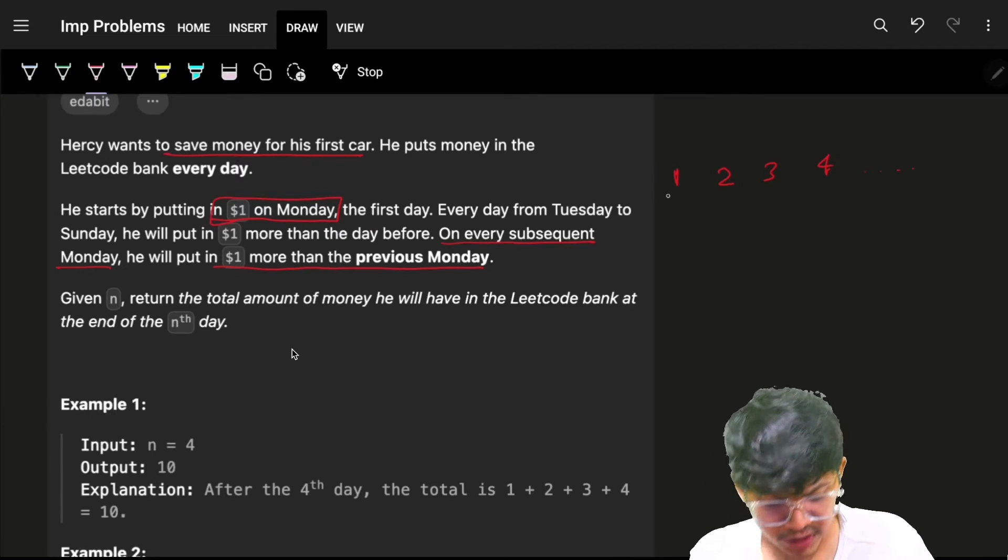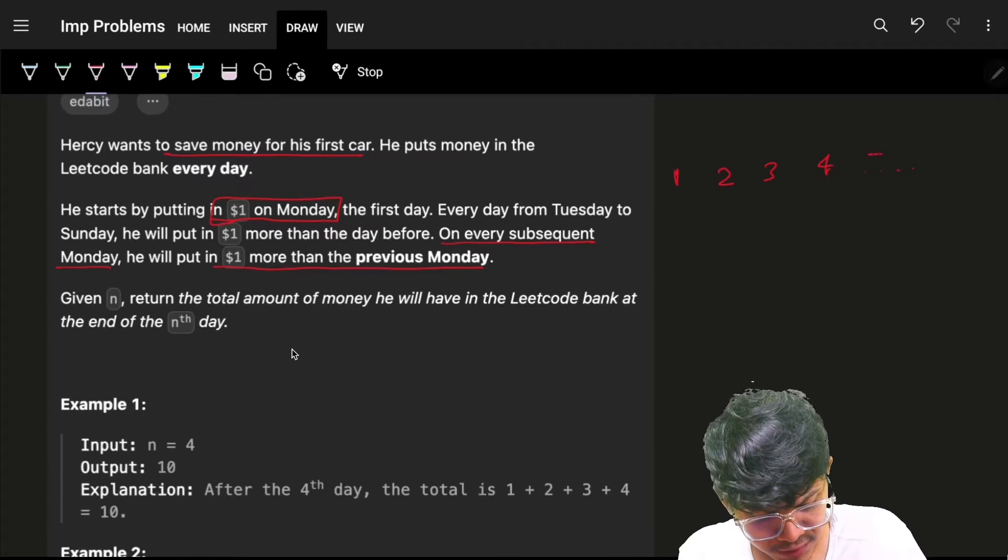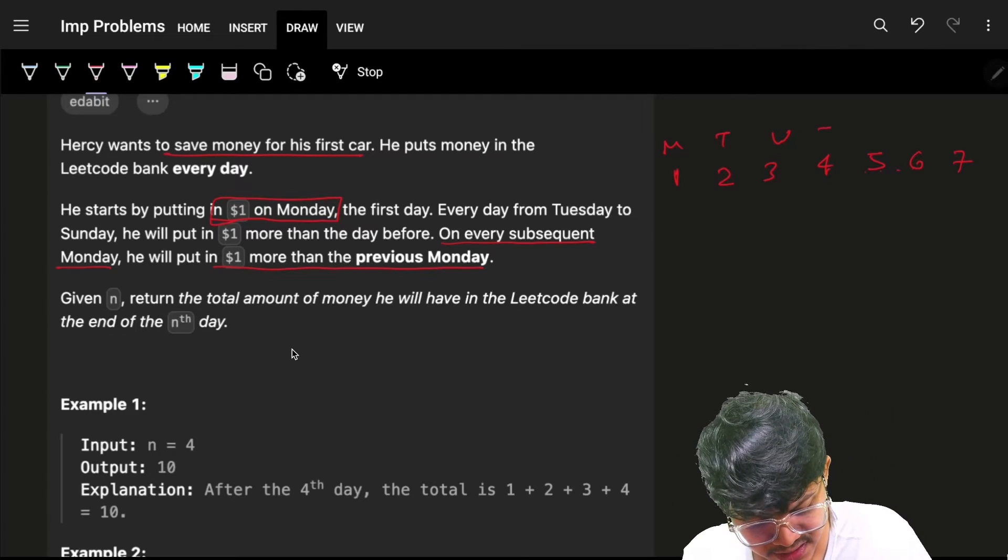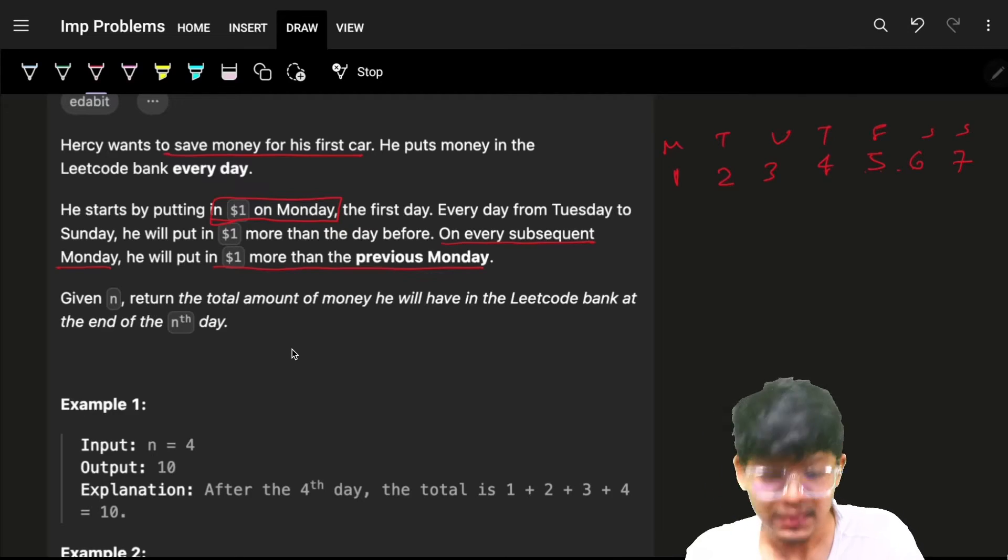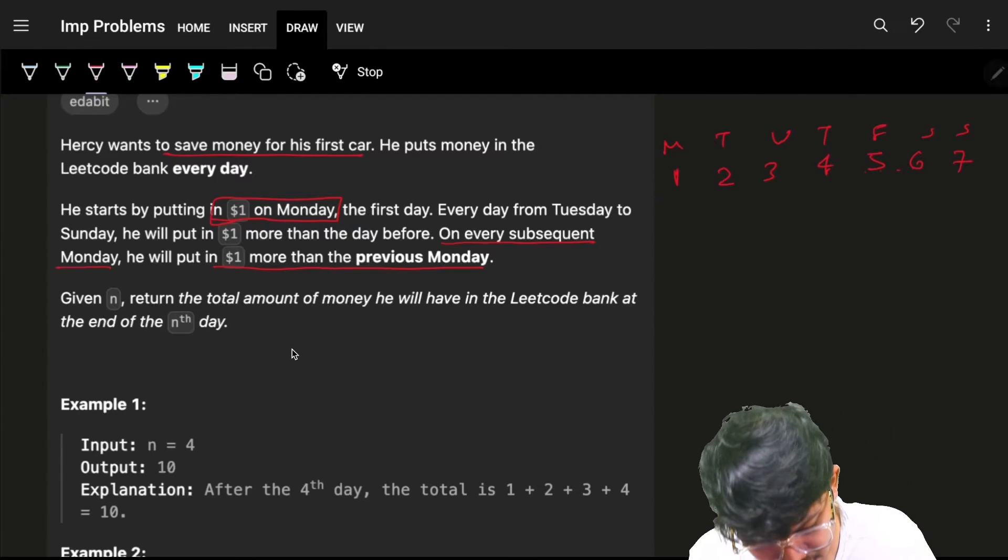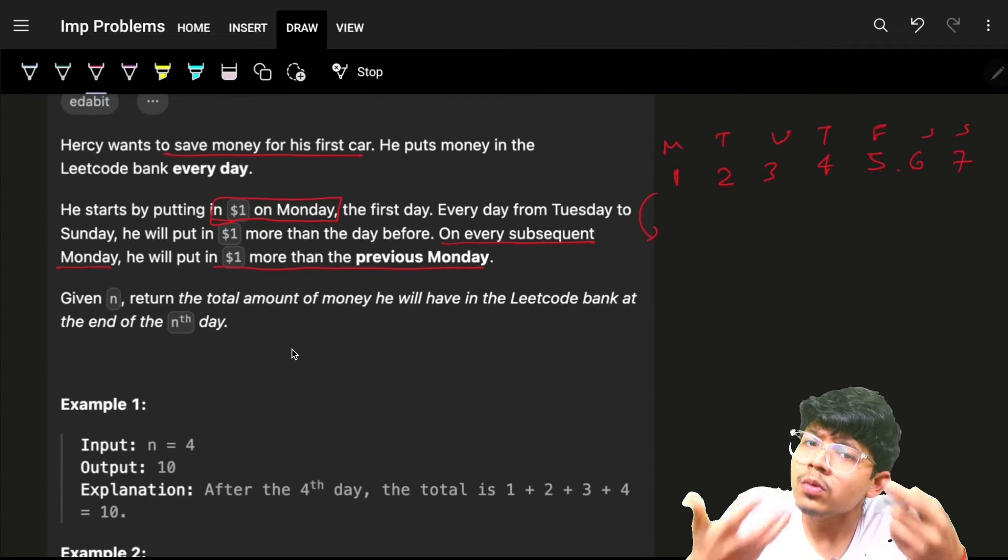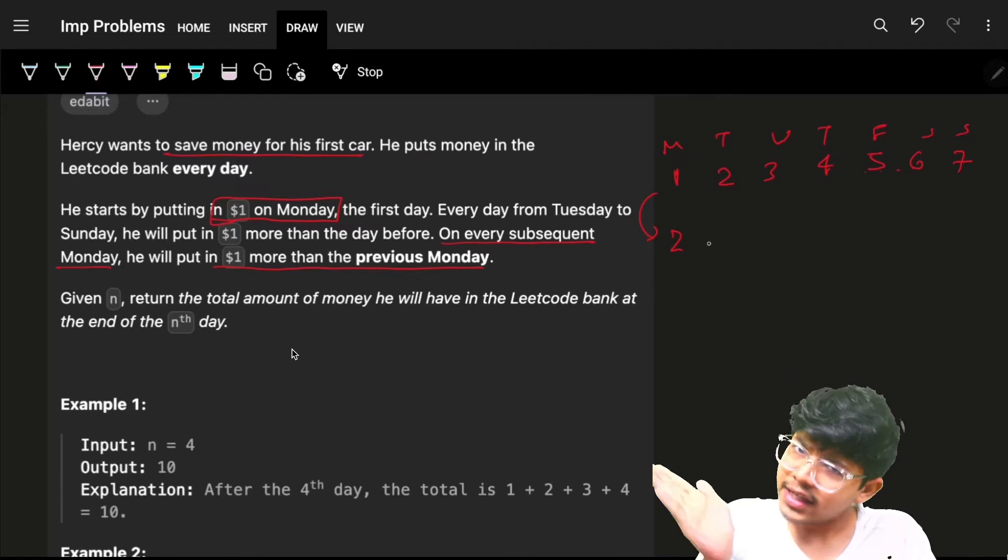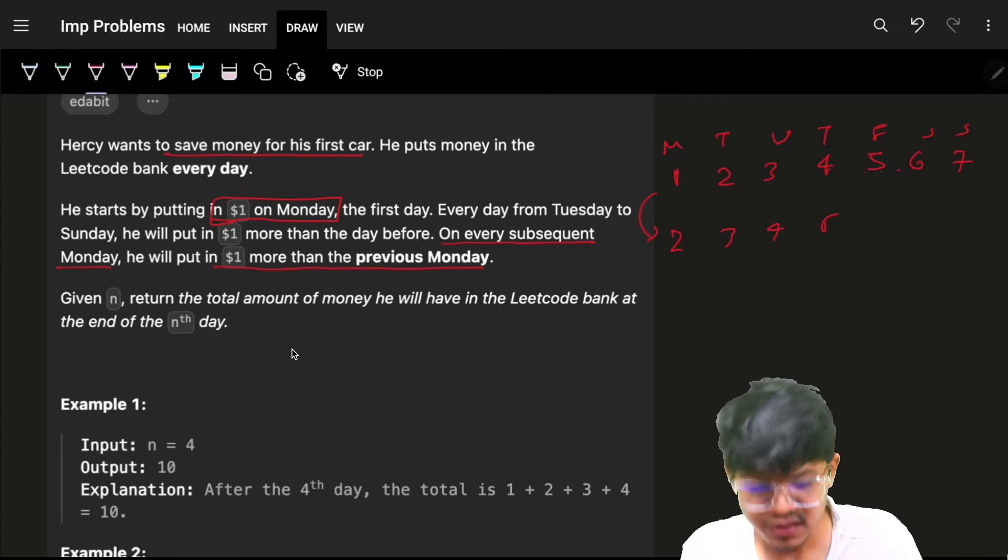So as you saw, the week will start 1, 2, 3, 4, 5, 6, 7. Then Monday, Tuesday, Wednesday, Thursday, Friday, Saturday, Sunday. Next Monday will come, and he will put in one more dollar than the previous Monday, which is 2. And again, he will keep on putting 3, 4, 5, and so on and so forth.